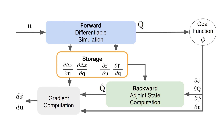At a high level, the method works by running a forward simulation where we compute and store intermediate quantities. These quantities are then used in a backward simulation pass, which allows us to compute the full derivative of the control variables with respect to the goal function.